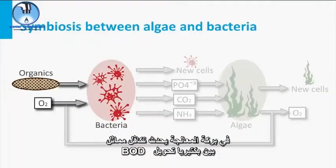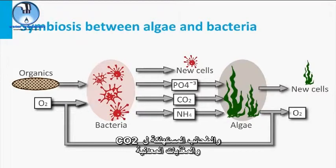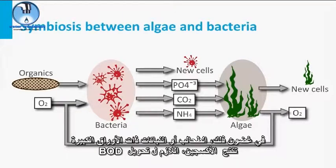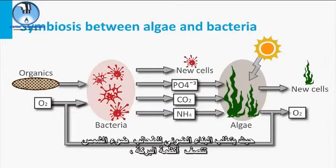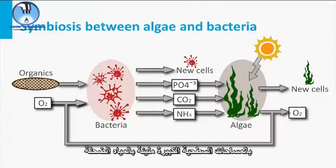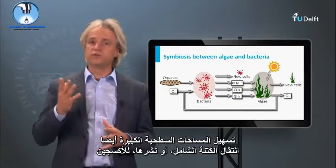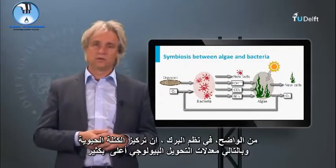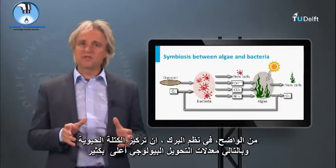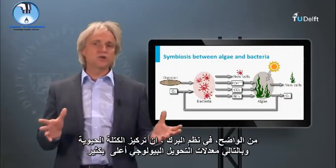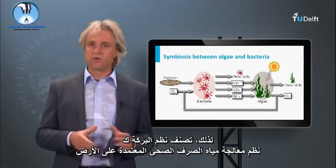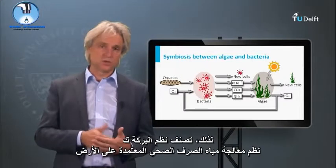In a treatment pond, a symbiosis occurs between the bacteria converting BOD and algae consuming the CO2 and the mineralized nutrients. In the meantime, the algae or macrophytes produce the oxygen required for BOD conversion. Since solar light is required for photosynthesis of algae, pond systems are characterized by large surface areas filled with shallow water. The large surface area also facilitates the physical mass transfer or diffusion of oxygen from the air to the liquid. In pond systems, biomass concentration and thus bioconversion rates are much higher than in natural ecosystems, so pond systems are classified as land-based wastewater treatment systems.